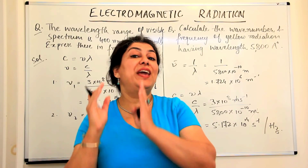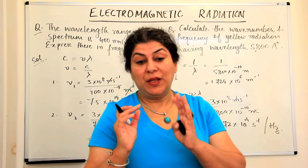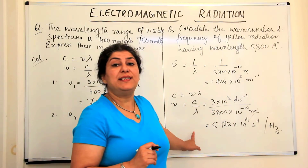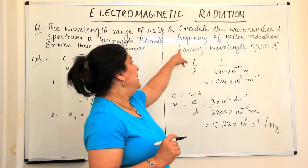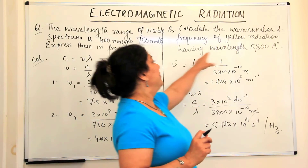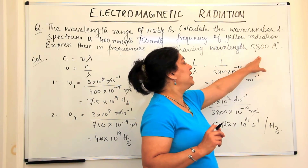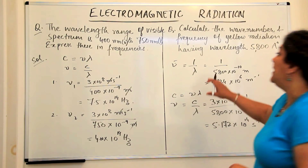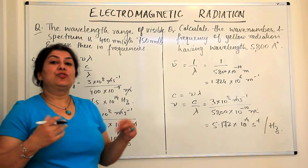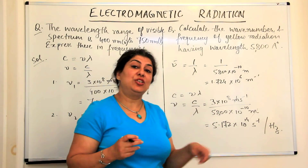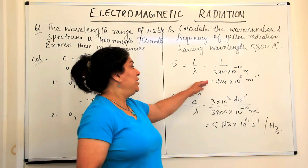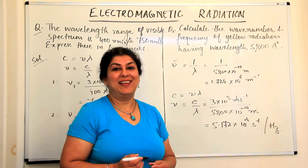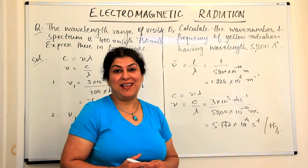We are covering only the wave nature of electromagnetic radiation now; we will do the particle nature too and solve more numerical problems. NCERT exercise question 5 is essentially the same problem — yellow radiation — but gives the wavelength as 580 nanometers. Convert 580 nm to meters by multiplying by 10⁻⁹, and you arrive at the same result. Practice as many questions as you can — it really helps. Thank you for watching.